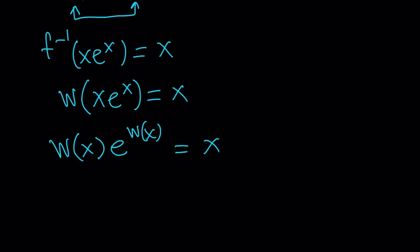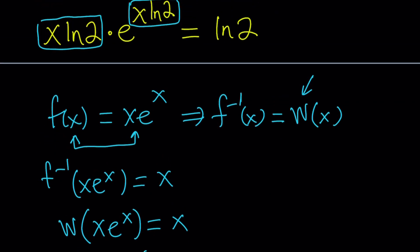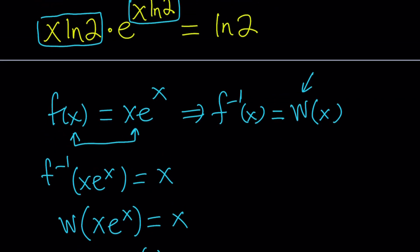So this is how Lambert's W is defined, and let's see how we're going to use it. Now notice that here we can do some substitution. Let me rewrite that here. We have x ln 2 times e to the power x ln 2 equals ln 2.